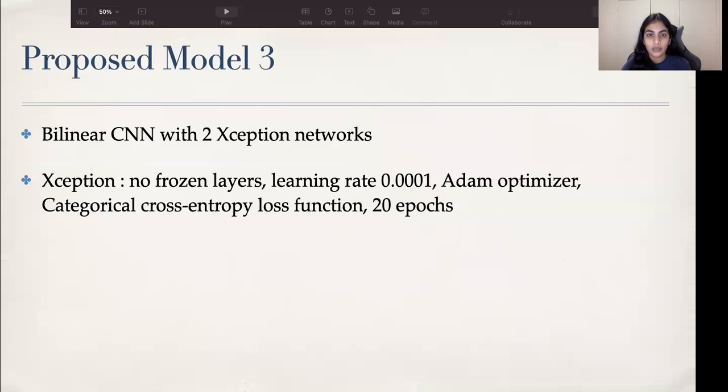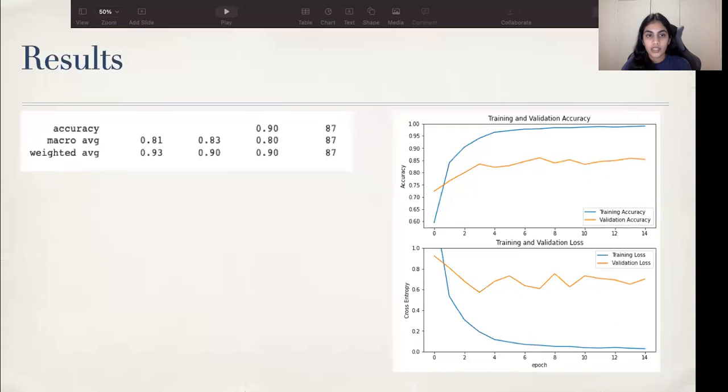As we saw, the bilinear model increases the accuracy of the CNN-based architecture. We implemented a bilinear CNN model with two Xception networks. The two Xception networks used in the bilinear CNN use the same parameters as the previous model. We achieved a validation accuracy of 0.9 with this model. The model performs better than the previous model as expected.